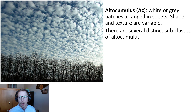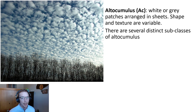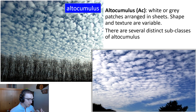Altocumulus clouds tend to form in large patches composed of rounded masses or rolls that may not merge — almost like a popcorn sky again. Because they're generally composed of water droplets rather than ice crystals, the individual cells usually have a much more distinct and less wispy outline. Shape and texture are variable, and there are several distinct subclasses of altocumulus clouds.